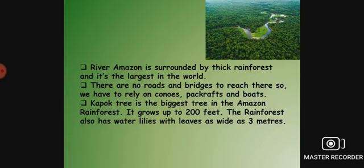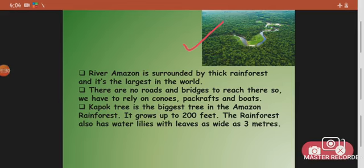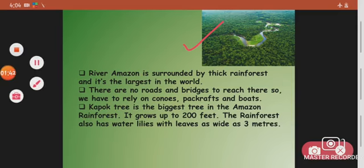You can have a look at the picture — the rainforest. See how thick and dense it is. The Amazon River is surrounded by thick rainforest and it is the largest in the world. There are no roads or bridges to reach there, so you have to rely on canoes, rafts, and boats.